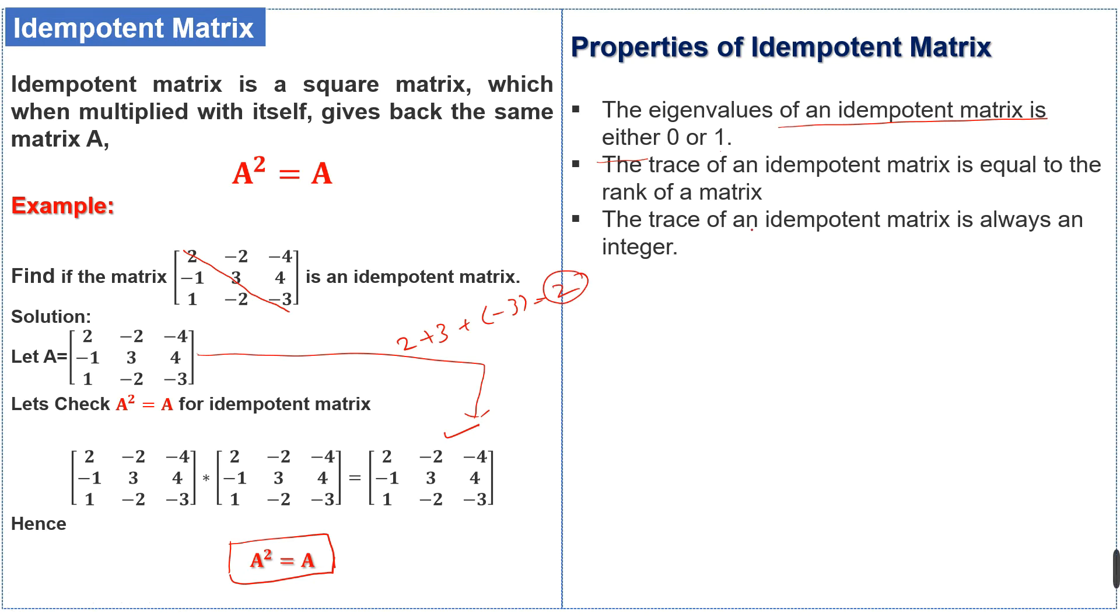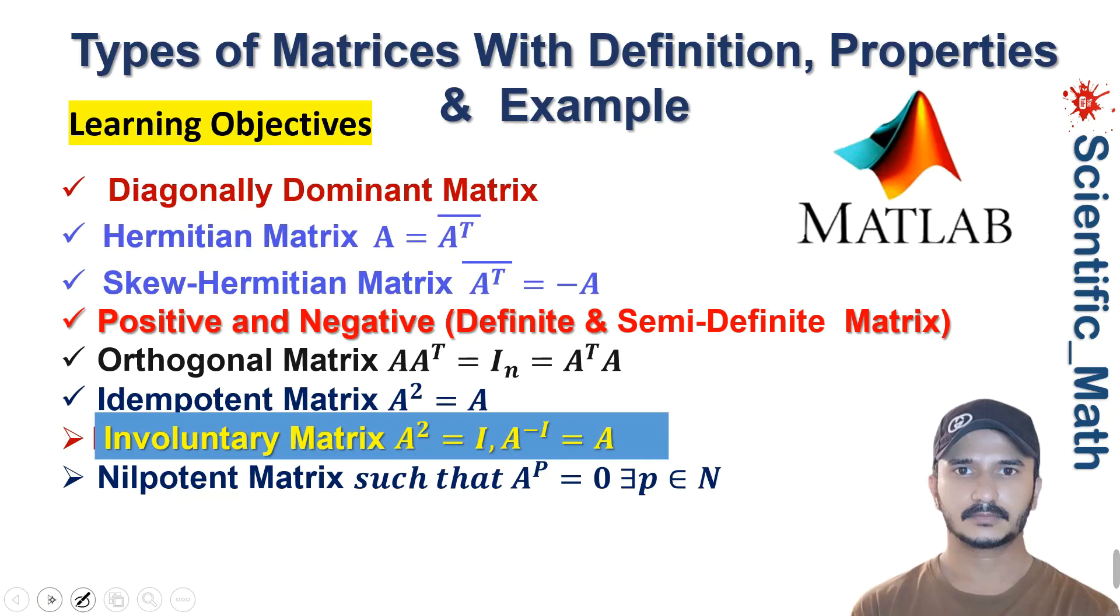The trace of an idempotent matrix is always an integer, a positive integer.